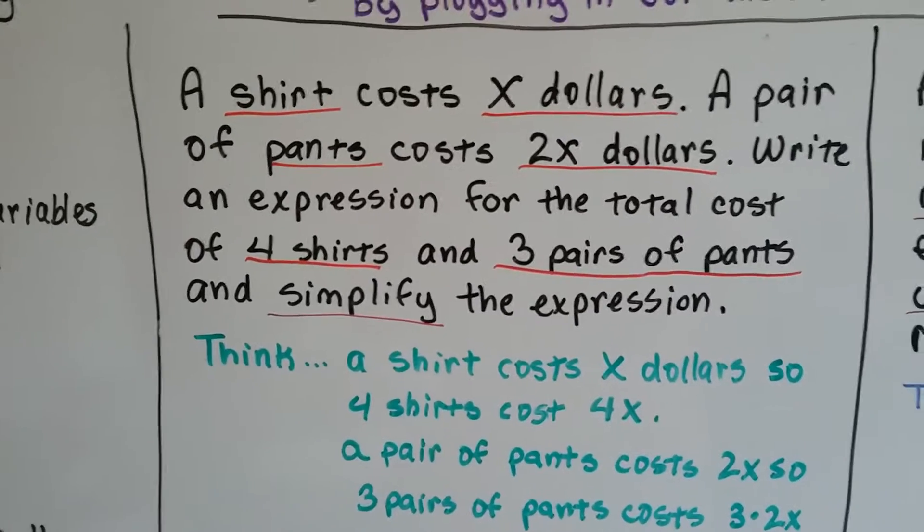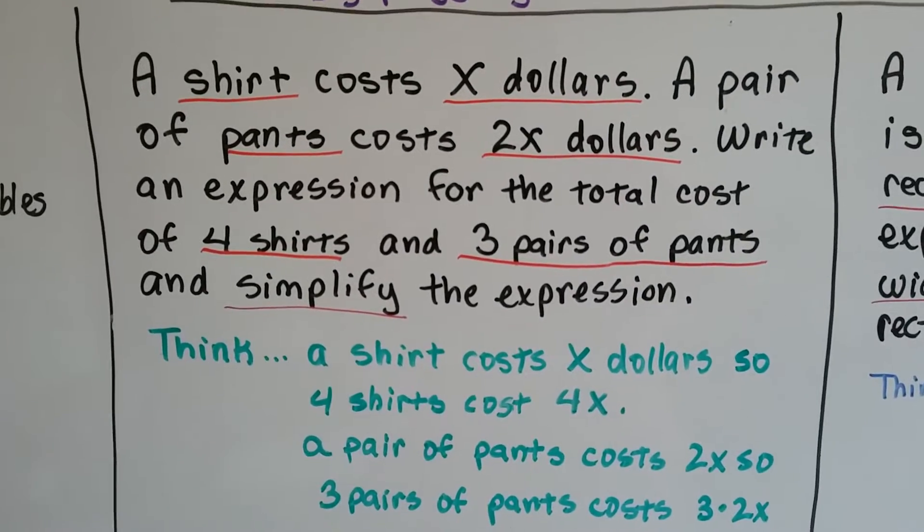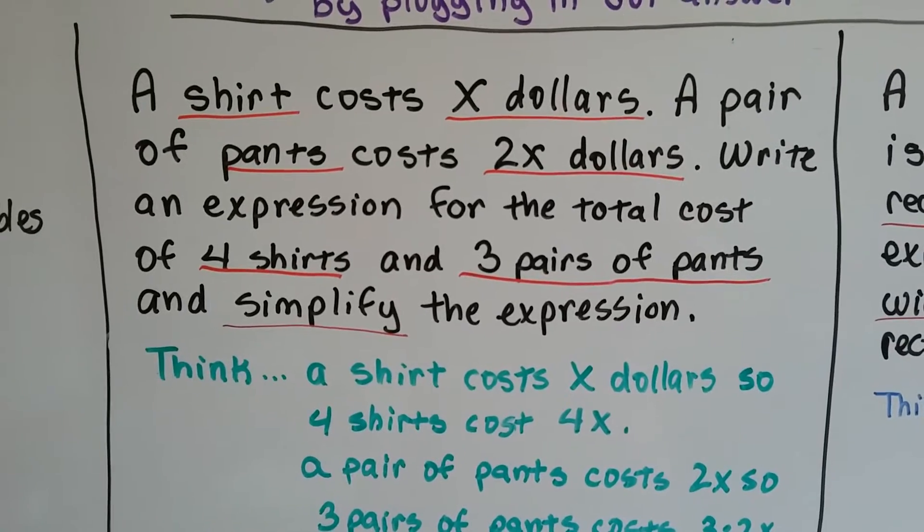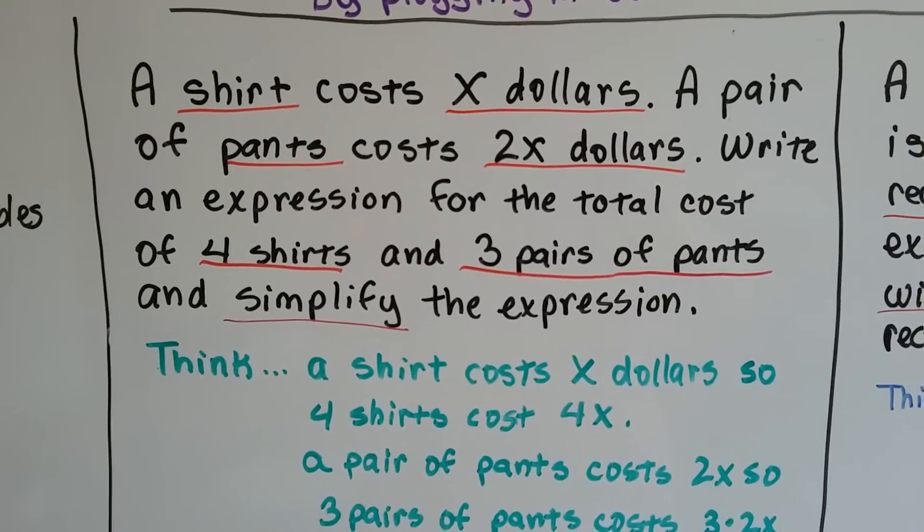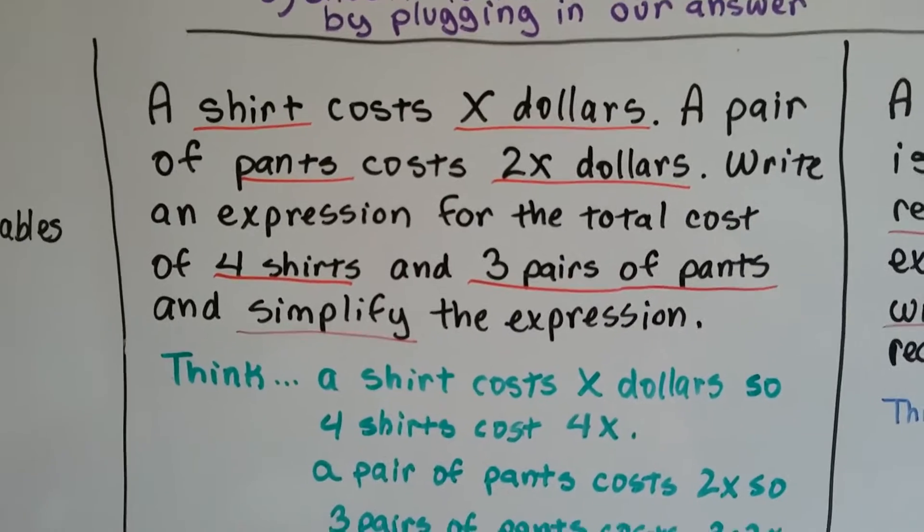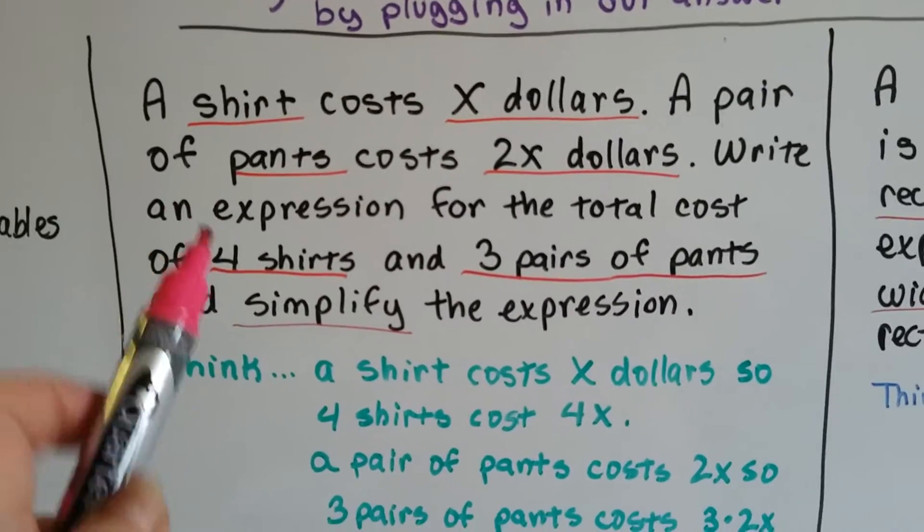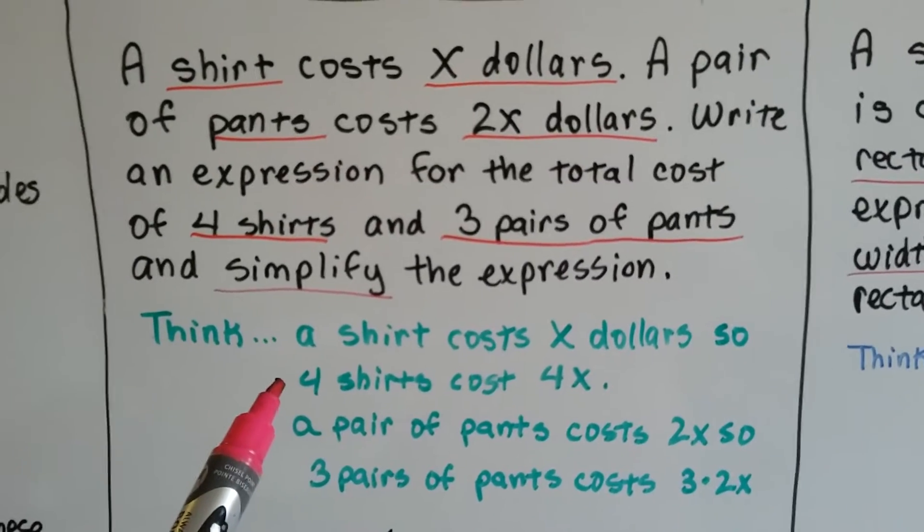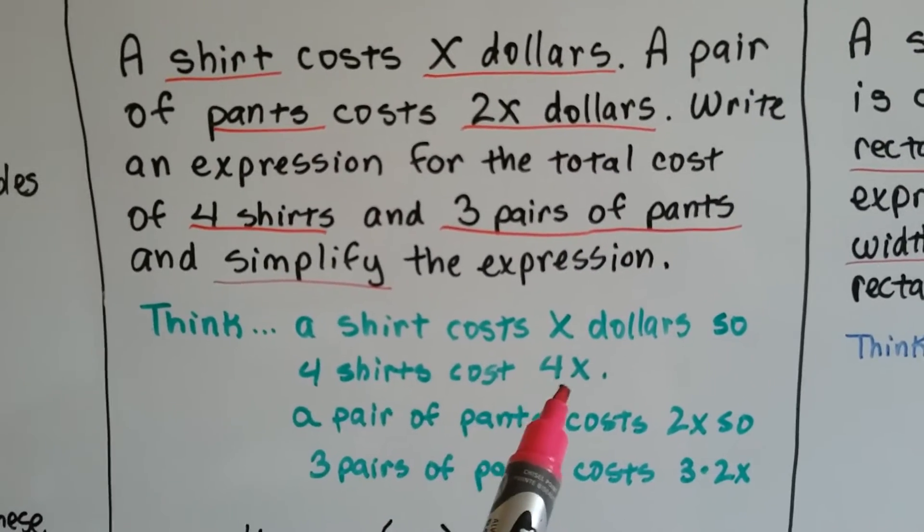Here we've got a problem. It says a shirt costs x dollars. A pair of pants costs 2x dollars. Write an expression for the total cost of 4 shirts and 3 pairs of pants and simplify the expression. A shirt costs x dollars and it said there's 4 of them. So if a shirt costs x dollars, we'd have 4 shirts that would cost 4x.